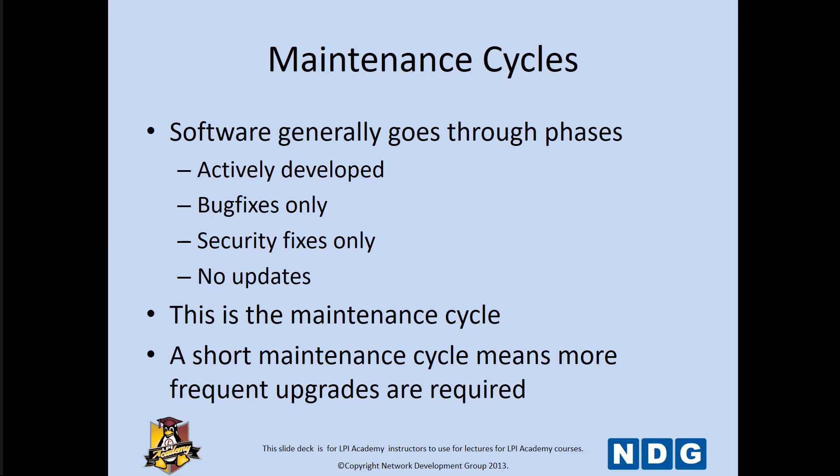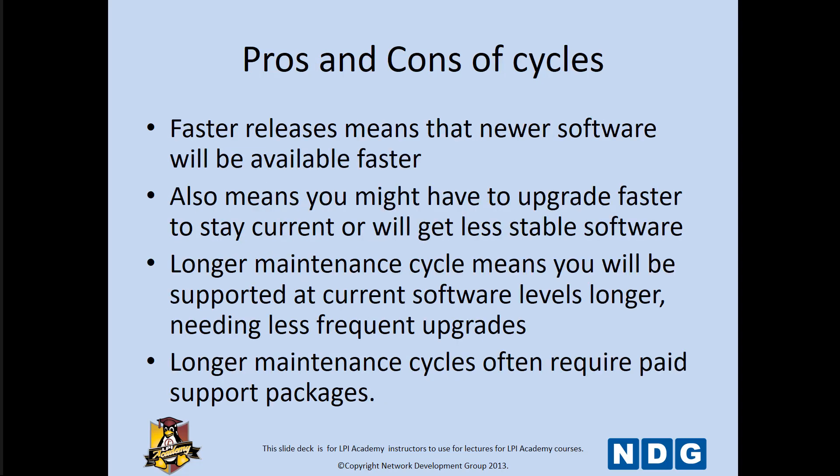There's also a maintenance cycle. Typically with the software they'll go through phases: the actively developed stage, the bug fix only stage, the security fixes stage, and then after a certain time it's no longer supported — the no update phase. A short maintenance cycle means more frequent upgrades, but more bugs are being caught and fixed more steadily. Faster releases means newer software, but newer software may come with newer security risks or vulnerabilities because they haven't been tested long enough — that could be a pro and a con.